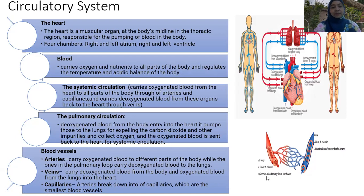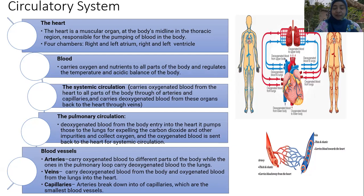Arteries carry oxygenated blood to different parts of the body — one of the pulmonary arteries carries oxygenated blood to the lung. Veins carry deoxygenated blood from the body and from the lung back into the heart. Capillaries are the breakdown of arteries — they are the smallest blood vessels.